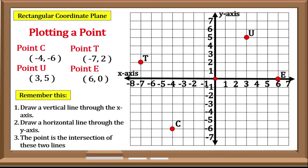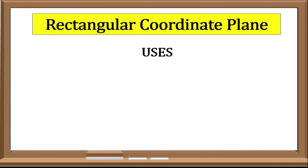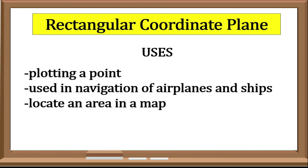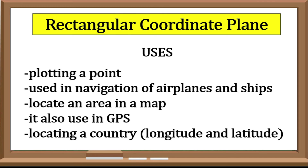Uses of the Cartesian Coordinate Plane: it is used in plotting points; it is used in navigation of airplanes and ships; it is used to locate an area in a map; it is also used in GPS; it is used in locating a country using longitude and latitude.